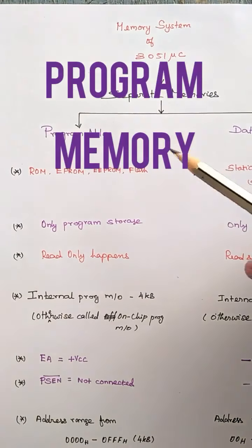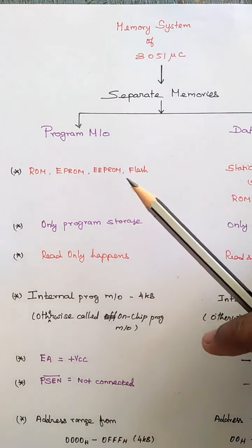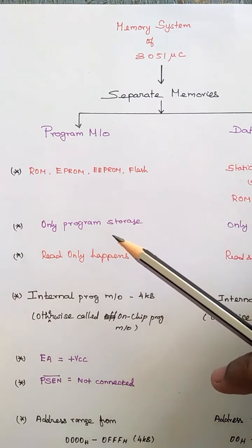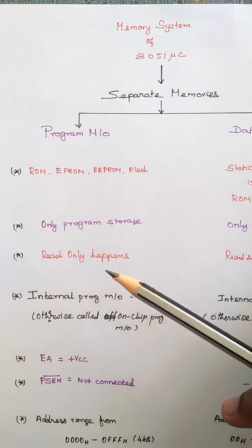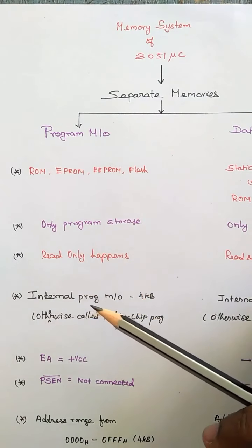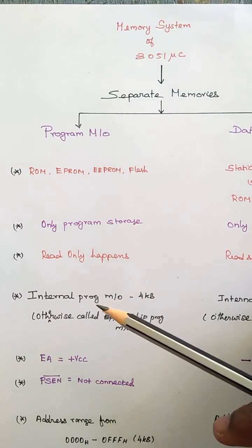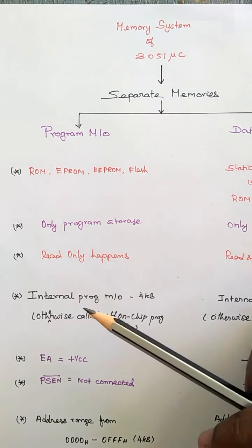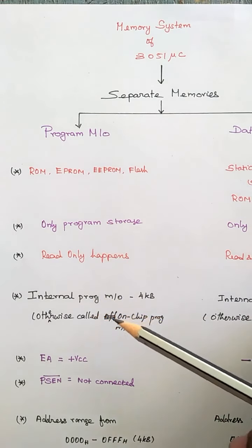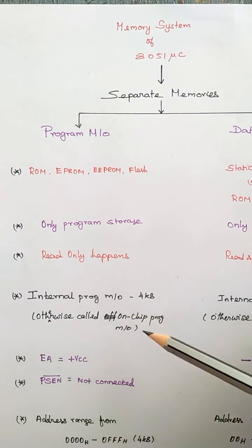Program memory can be of type ROM, EPROM, EEPROM, or flash memory — it is used only for program storage, so only reading happens. Program memory can be classified into internal and external. This IC contains internal program memory of 4KB, which is available inside the chip and is called on-chip program memory.